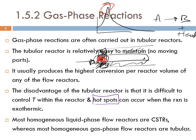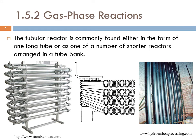Most homogeneous liquid phase reactors are CSTRs, whereas most homogeneous gas phase flow reactors are tubular. The tubular reactor is commonly found either as one long tube arranged back and forth, or as one of a number of shorter reactors arranged in a tube bank — for example, the steam reformer with a header and many tubes.